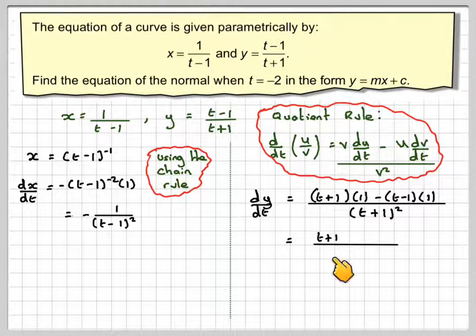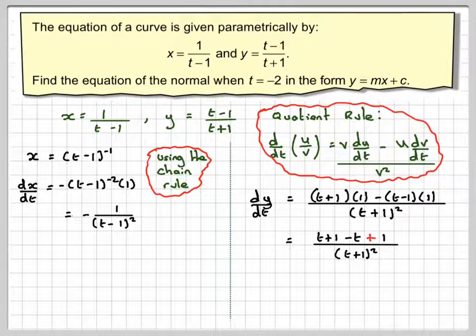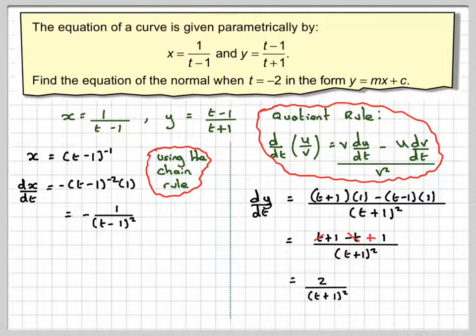Simplifying that, I get t plus 1 minus t plus 1 over t plus 1 squared. So t minus t, they will cancel out and then we're going to be left with 2 over t plus 1 squared.